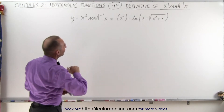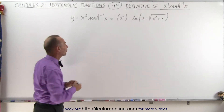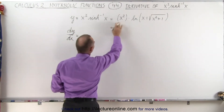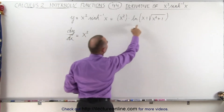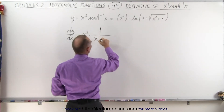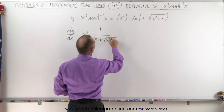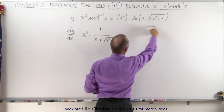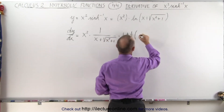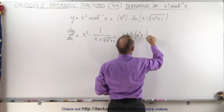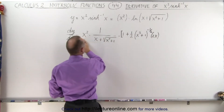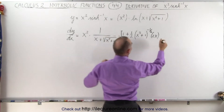So now we see that we have a product. When we take the derivative, we're going to use the product rule. So dy/dx is equal to the first times the derivative of the second, which would be times 1 over x plus the square root of x squared plus 1, times the derivative of what's inside, which would be 1 plus one-half times x squared plus 1 to the minus one-half power times the derivative of what's inside, which is 2x.